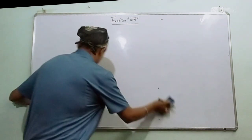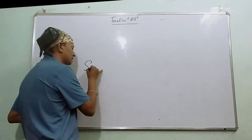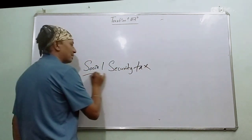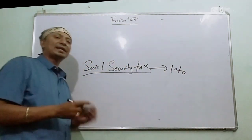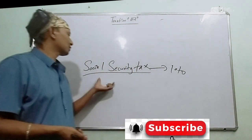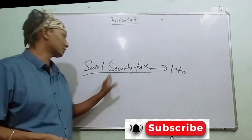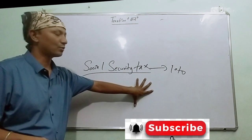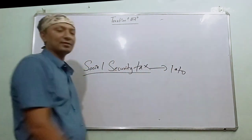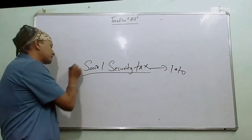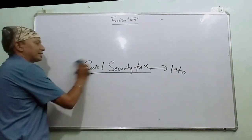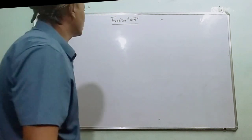Now, what do we mean by Social Security Tax? Social Security Tax is 1%. Social Security Tax is imposed by the government. For example, if the Social Security Tax threshold is 10 lakhs, then Social Security Tax is 1 lakh.